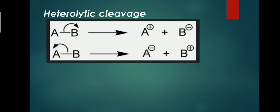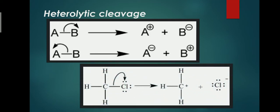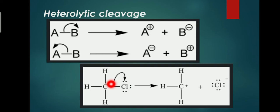This asymmetrical splitting of the bond results in the formation of a cation and an anion. For example, in methyl chloride, when the bond between chlorine and carbon breaks, chlorine being more electronegative takes the bond pair of electrons towards itself — indicated by a curved arrow — leaving chlorine as the anion and carbon as the cation.